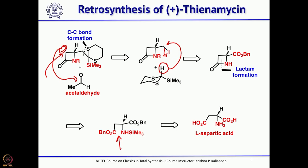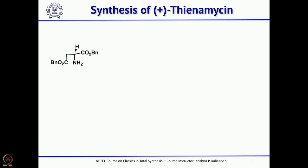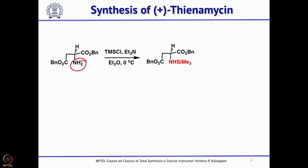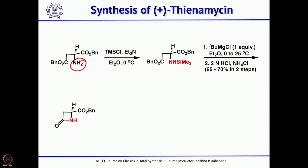Starting from L-aspartic acid, both carboxylic acids were protected as benzyl esters. The NH2 was protected with a transient protecting group, TMS chloride — a labile group used for only one or two steps. Treatment with base (tert-butyl magnesium chloride) generates the anion, which attacks intramolecularly the carbonyl of the benzyl ester to form the 4-membered lactam. The TMS group is then cleaved by treatment with 2N HCl.